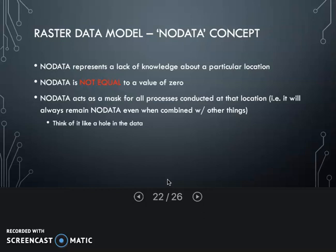That's how you get a hole in the dataset or like a donut. No data does not equal a value of zero. It's a special concept and it's treated very specially within the raster data model.